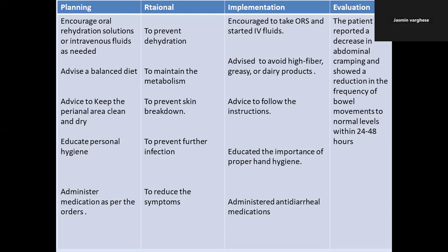The sixth planning item is to advise a balanced diet to maintain metabolism. In implementation, advise the patient to avoid high fiber, greasy or oily, and dairy products. Also advise to keep the perineal area clean and dry, because frequent toilet use can lead to skin breakdown. The rationale is to prevent skin breakdown.